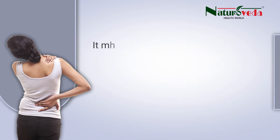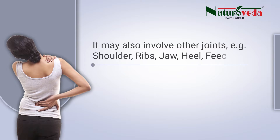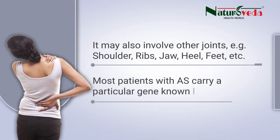It may also involve other joints, such as the shoulder, ribs, jaw, heel, and feet. Most patients with AS carry a particular gene, known as HLA-B27.